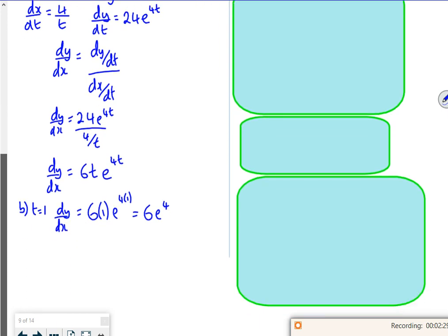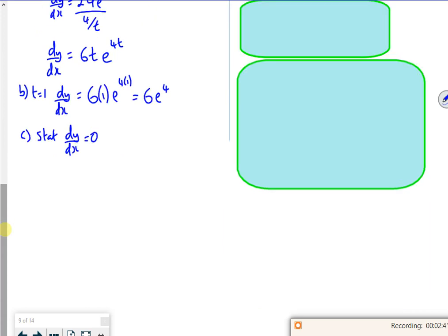Stationary point. So that's when dy by dx is 0, isn't it? Alright, so let's have a look then. So where is it? 6t e to the 4t, so differentials. 6t e to the 4t is 0. So 6t is 0, it's nothing. e to the 4t is 0.